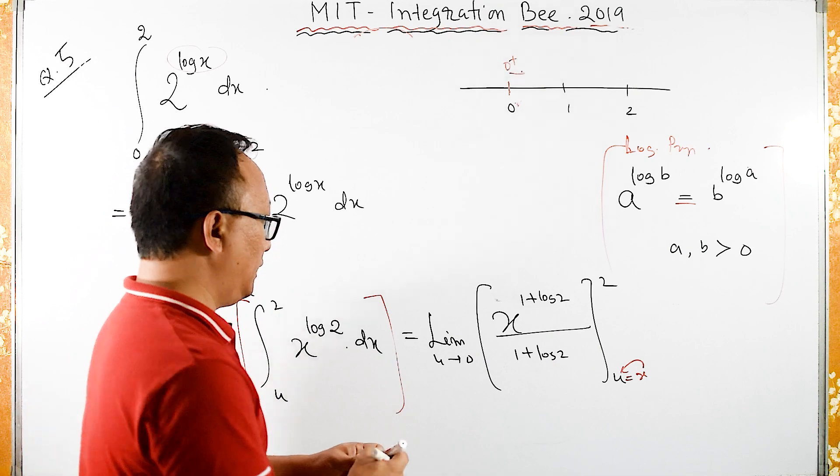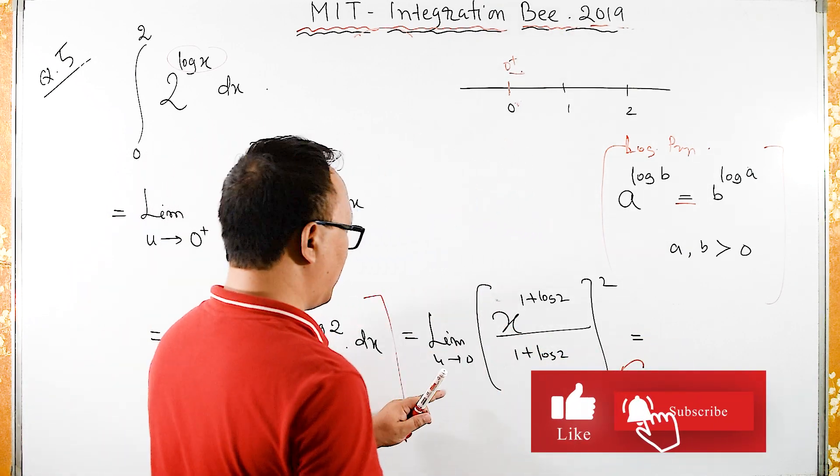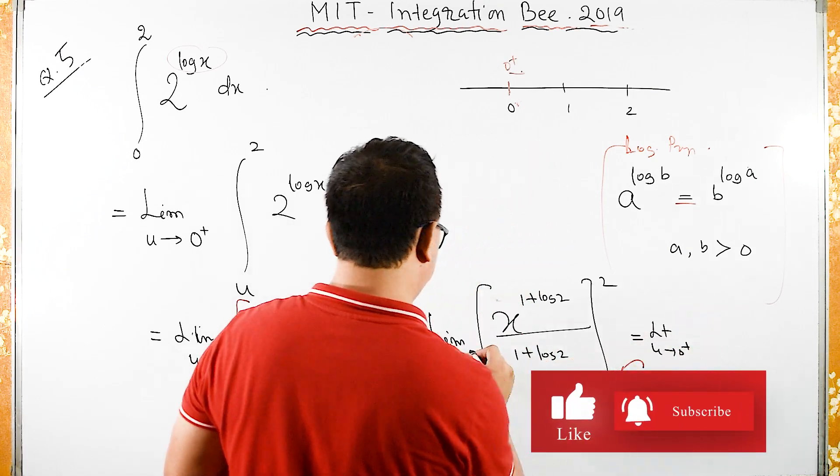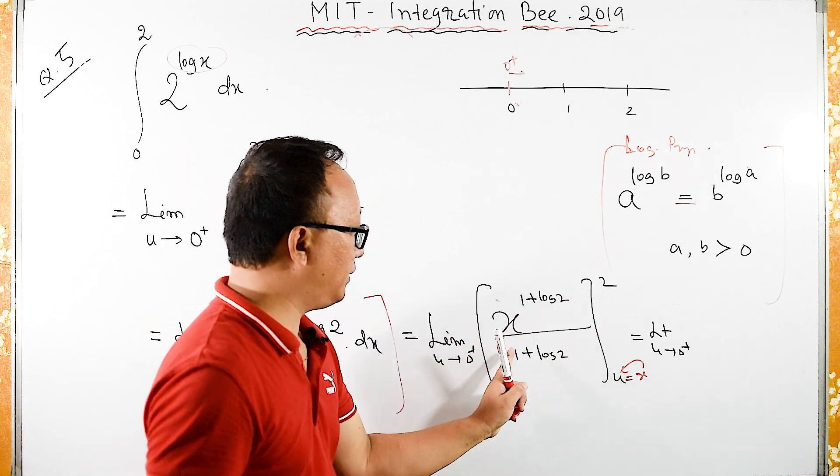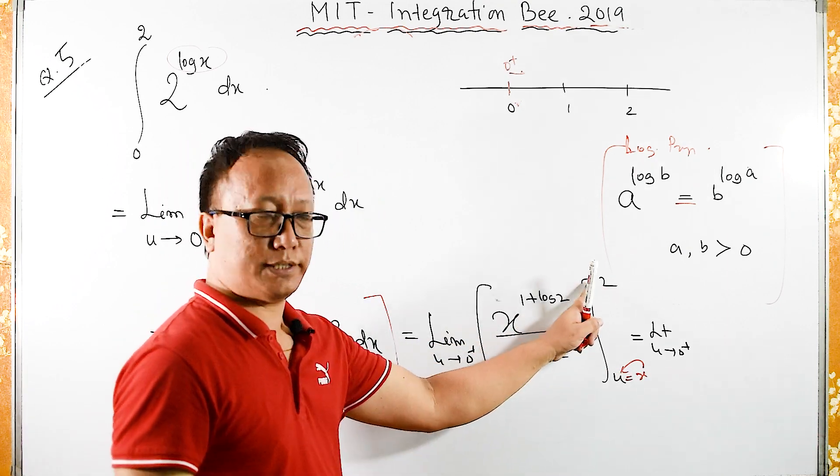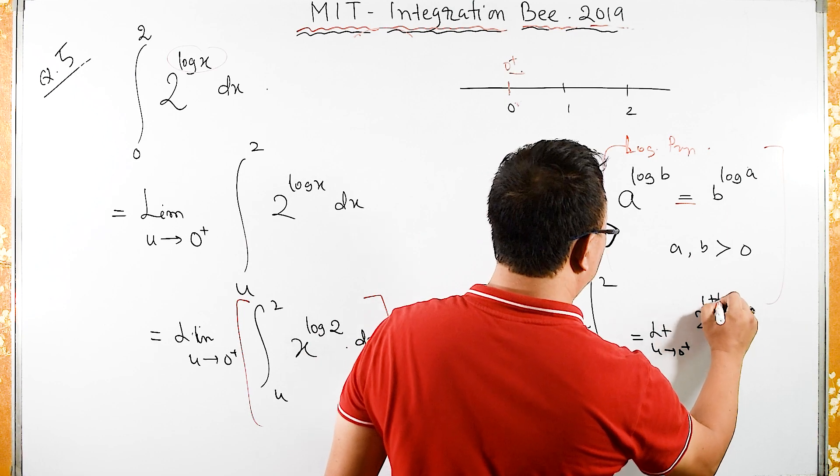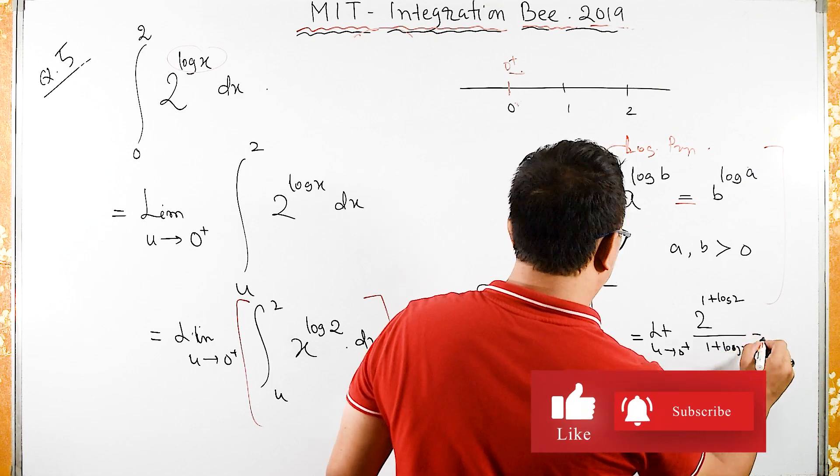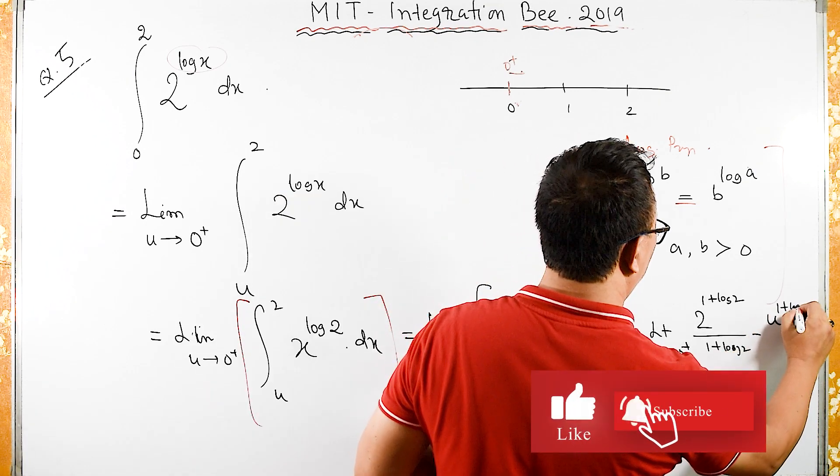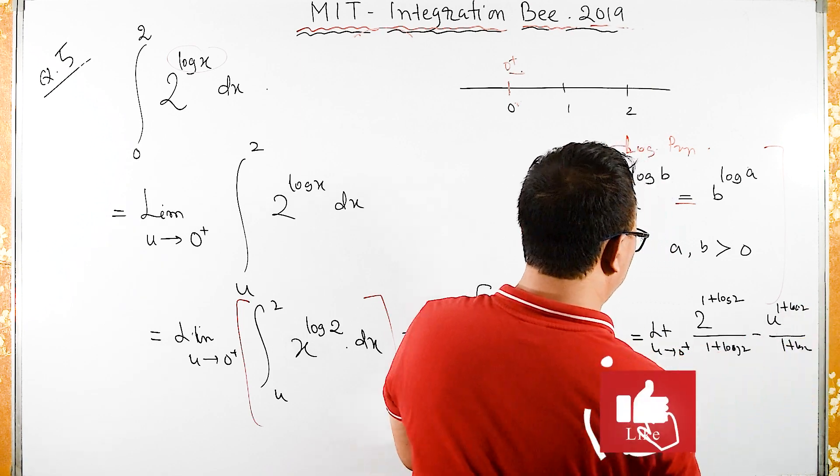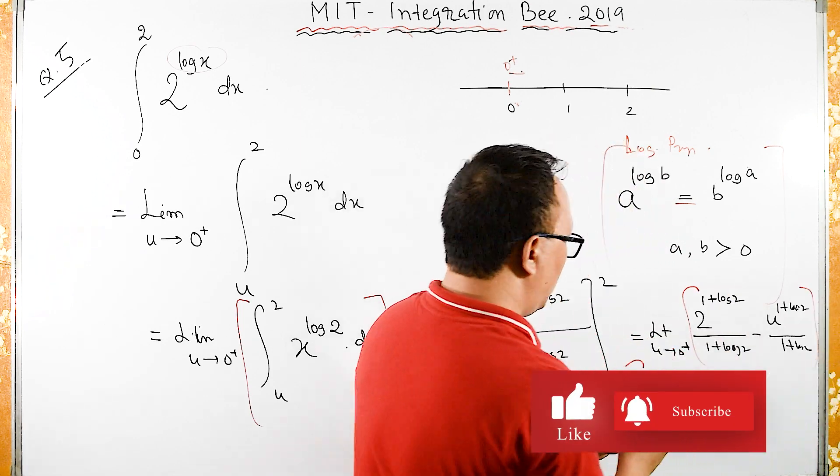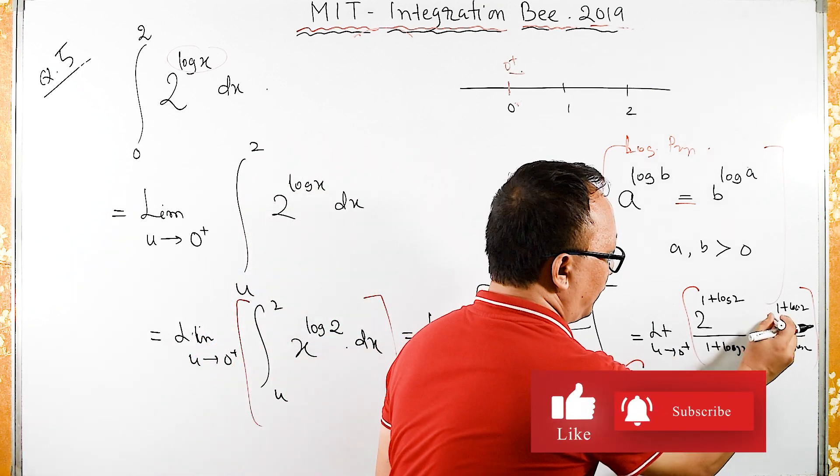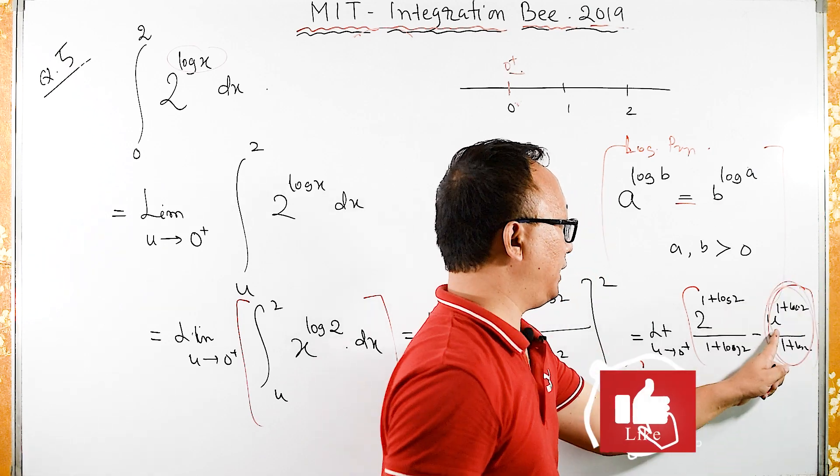Now let us substitute. This is equal to limit of u tends to 0 plus. If I substitute upper limit, instead of x I have to substitute 2, so 2 raised to 1 plus log 2 upon 1 plus log 2, minus u raised to 1 plus log of 2 upon 1 plus log of 2.